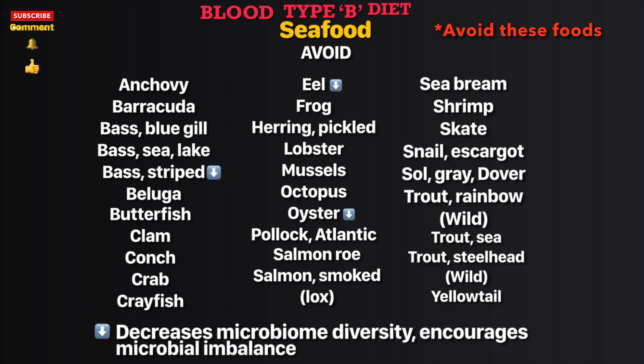Seafood to avoid: anchovy, barracuda, bass (bluegill, sea, lake, and striped), beluga, butterfish, clam, conch, crab, crayfish, eel, frog, pickled herring, lobster, mussel, octopus, oyster, pollock, Atlantic salmon, rose salmon, smoked salmon, sea green, shrimp, skate, snail (escargot), sole, gray dover trout.